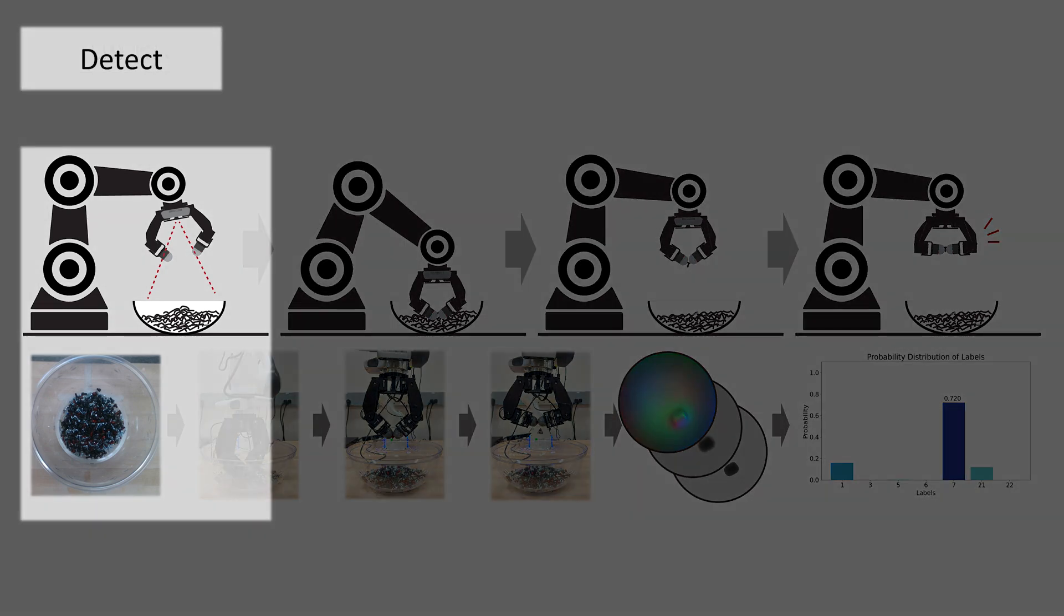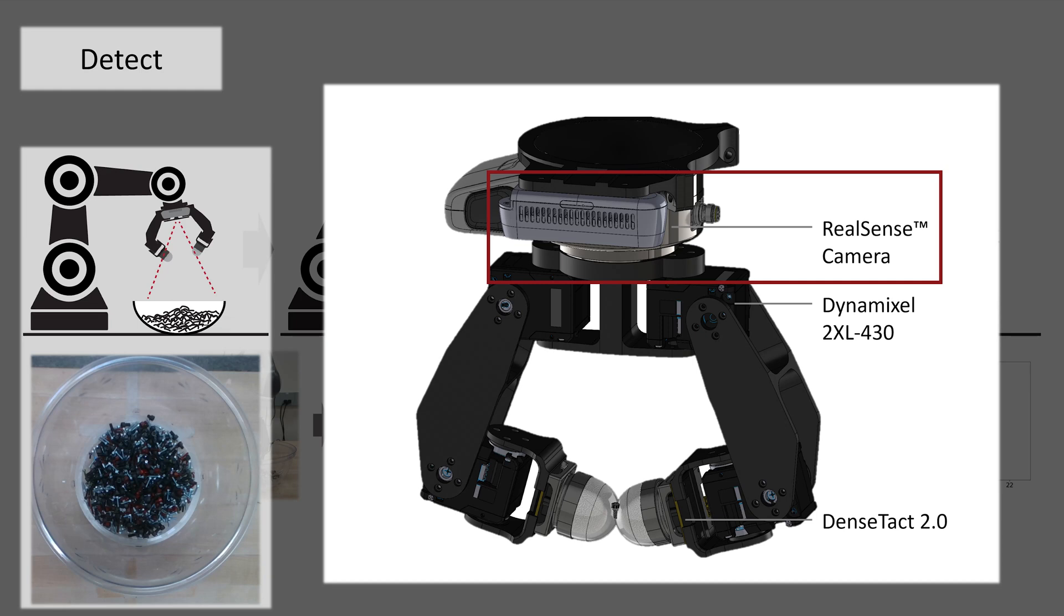First step is the detection state, where the depth camera detects the highest point of the cluttered environment. The RealSense depth camera is attached on top of the gripper, which has four revolute joints for each finger for inter-finger manipulation.